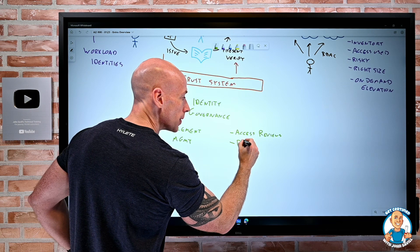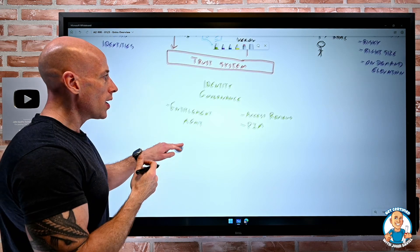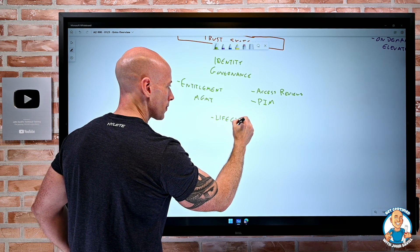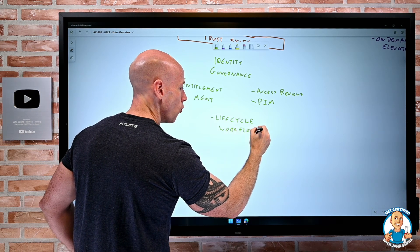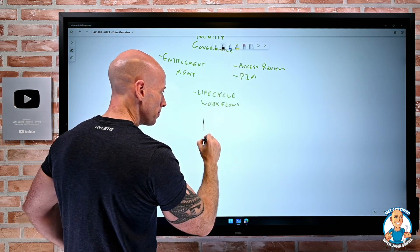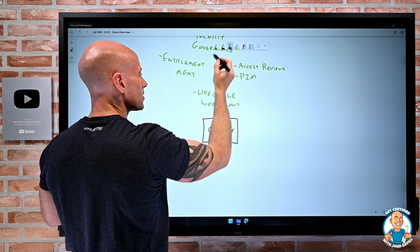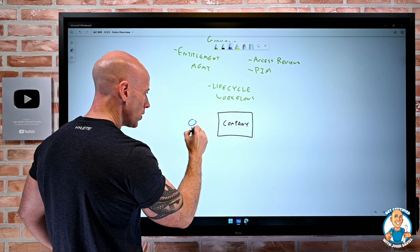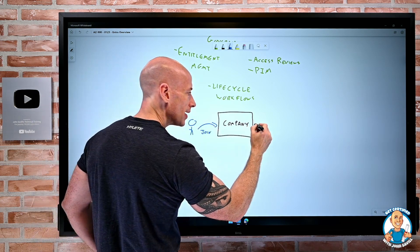There's things like privileged identity management. So I can do that just-in-time elevation against Azure roles and Azure AD roles. But one of the nice new functionalities here is lifecycle workflows. And this is all based around the idea that if I think, there is some company, and we always talk about the idea of the human being as the person—there's times that we join a company. So there's joiner, mover, leaver.